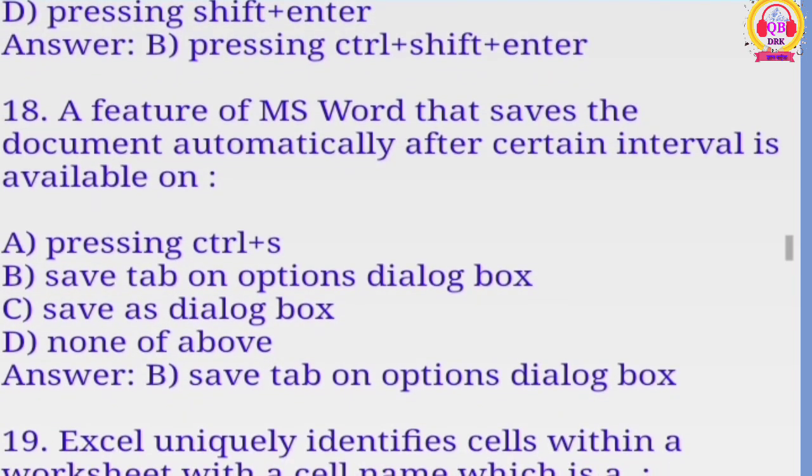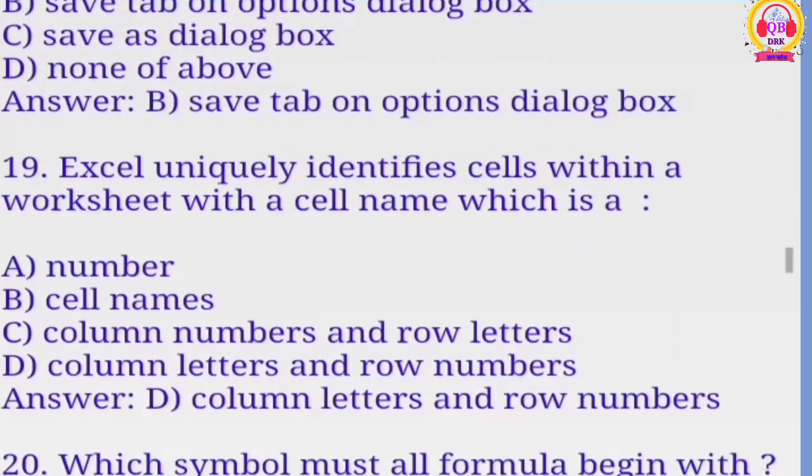A feature of MS Word that saves the document automatically after a certain interval is available on ABCD. The correct option is B, the save tab on options dialog box.